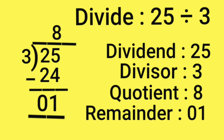So, in this sum, dividend is 25, divisor 3, quotient 8, and remainder is 1. Thank you.